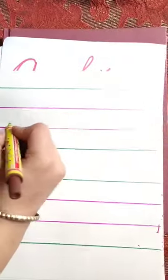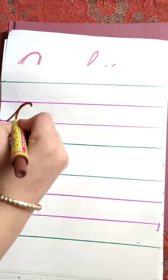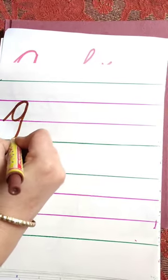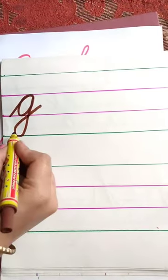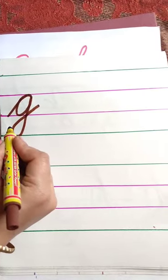Next letter is G. G, G, G, Grapes. G, G, Gourd.